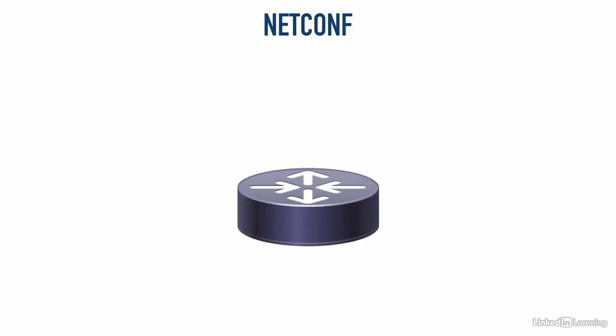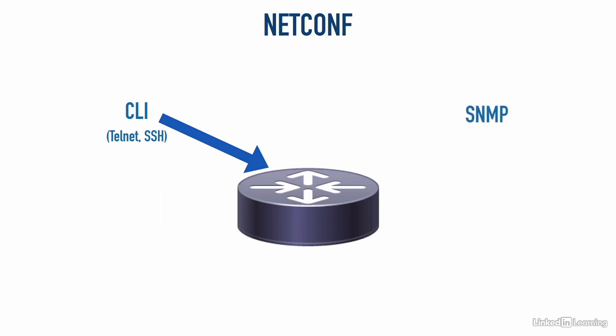We have different ways of configuring a network device like a router. We could connect via Telnet or preferably Secure Shell and access the command line interface — the CLI — and give commands there. Or we could use something like SNMP, the Simple Network Management Protocol.